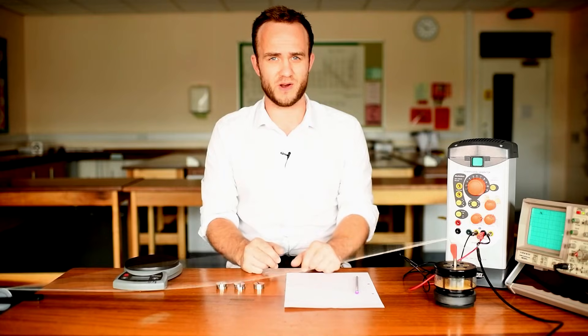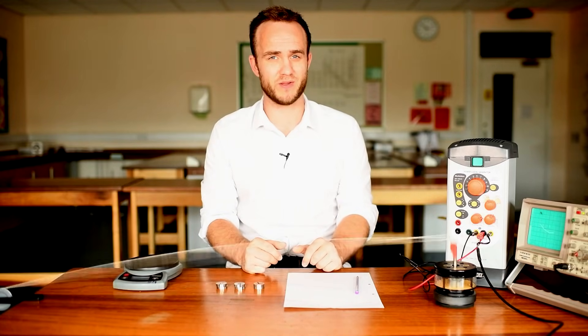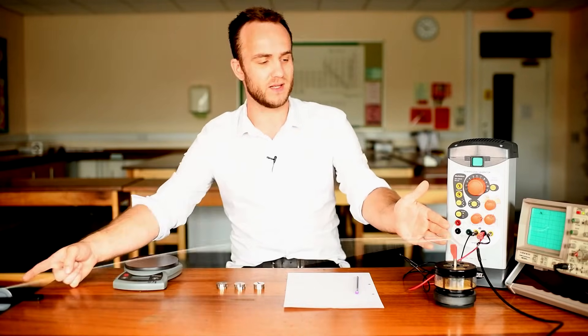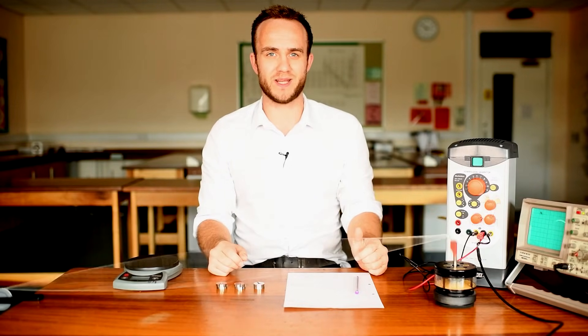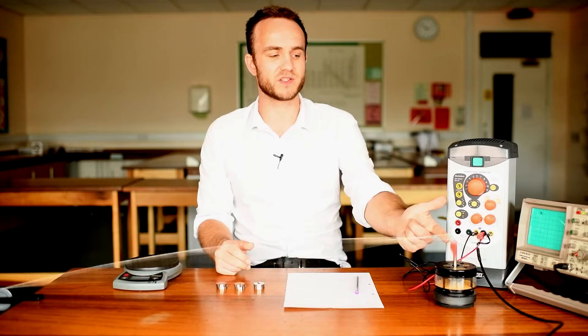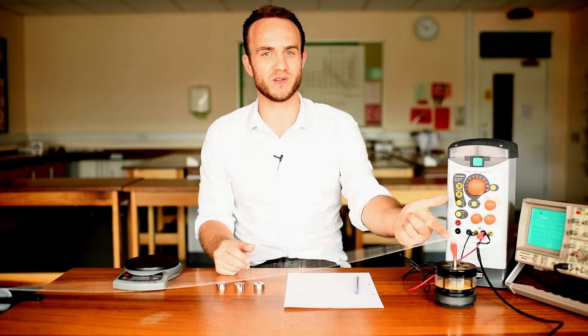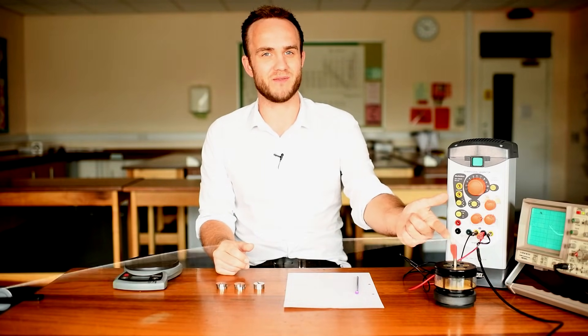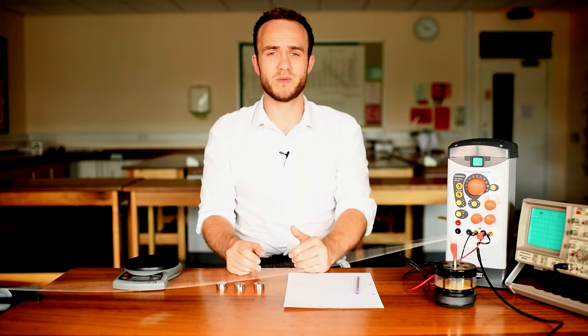This is the first harmonic. It's the simplest standing wave that you can make. We have a node on either end. That's where the string isn't moving. The string is moving at this point due to the oscillator, but we don't have an anti-node. We don't have constructive interference happening at that point.